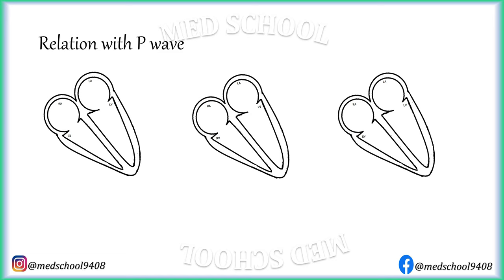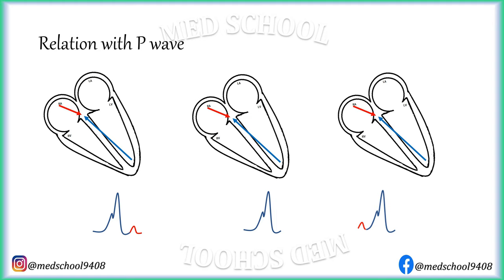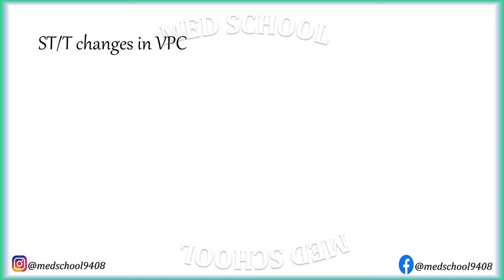To understand the relation of VPC to P-Wave, let's consider three possible scenarios. When the ventricular impulse is generated before the sinus impulse, the P-Wave will follow VPC. When the ventricular impulse is generated simultaneously with the sinus impulse, the P-Wave will be embedded within the QRS complex and not seen separately. When the ventricular impulse is generated after the sinus impulse but early enough to depolarize the ventricles before the sinus impulse, then the P-Wave will precede the VPC, and the PR interval will be very short.